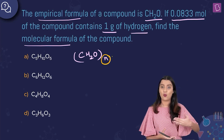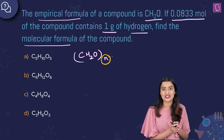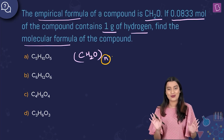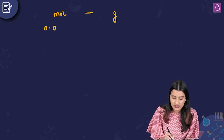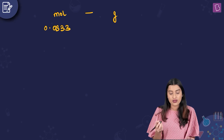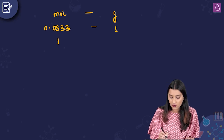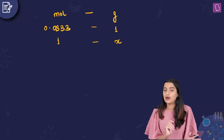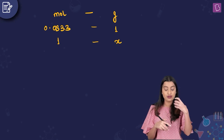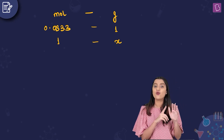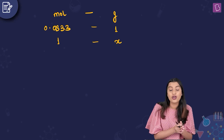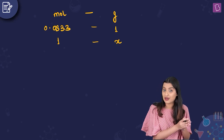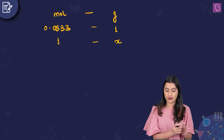This is a topic from 11th standard chemistry, so we're familiar with it. Here, 0.0833 moles of the compound has 1 gram of hydrogen. I want to find how many grams of hydrogen are in 1 mole of the compound. If I find the weight of hydrogen in 1 mole of the compound, I can find the number of moles of hydrogen atoms in 1 mole, which gives me n, and therefore the molecular formula.